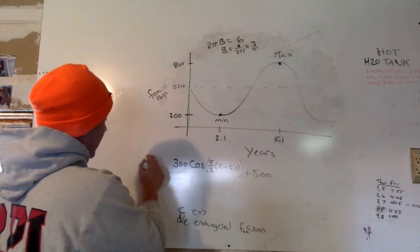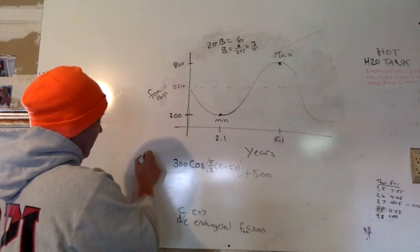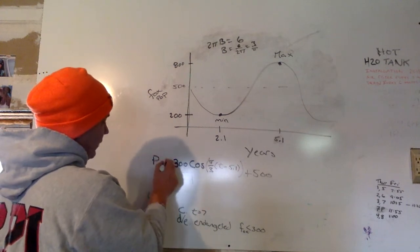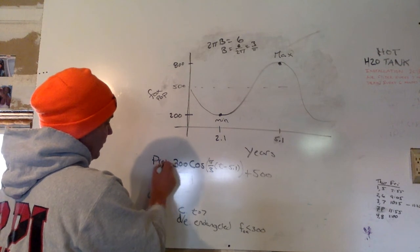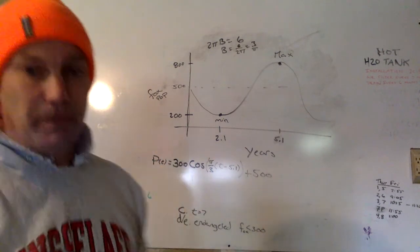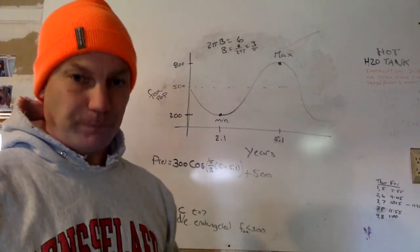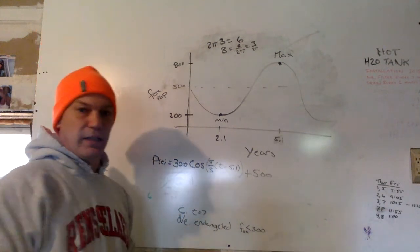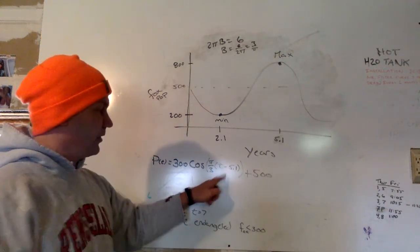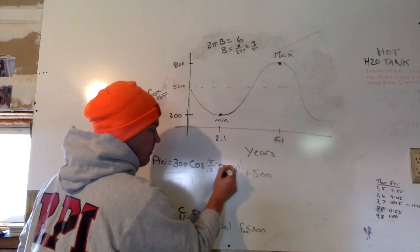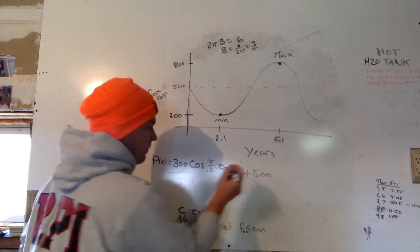Alright, so I know that the number of foxes, the population of foxes, as a function of time, is this equation. So that's step 1. And I'm sorry that that is bleached out a little bit for you, but this is t minus 5.1.